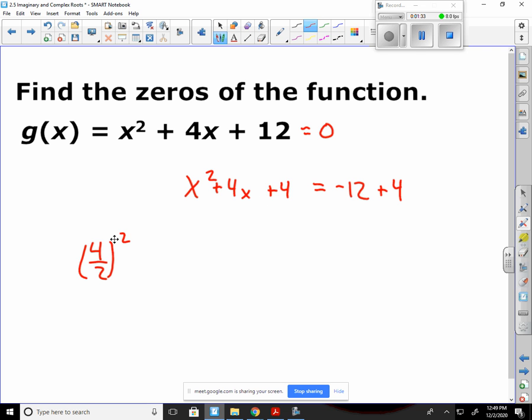Once I do that, I now know that this left side is going to become x plus 2 squared. And I know that because this was a 2 inside of here before we squared it. And then that's equal to negative 8.